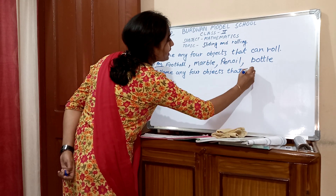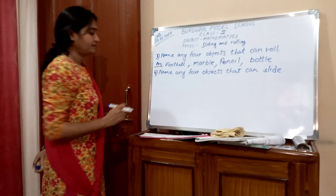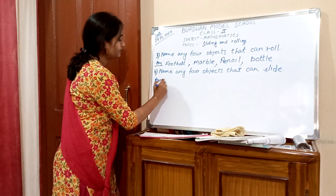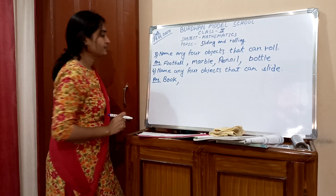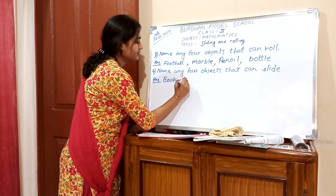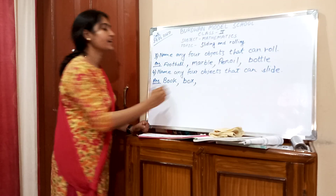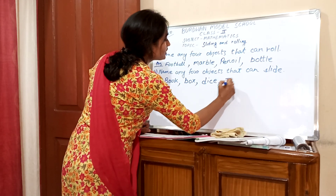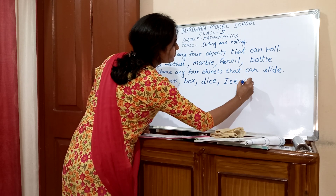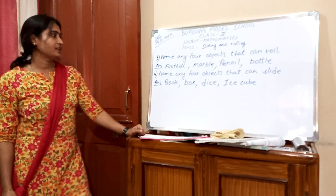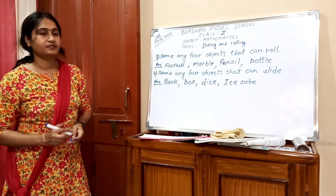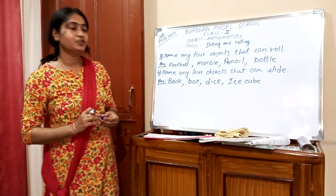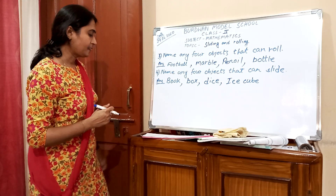Name any four objects that can slide. Which object can slide? Book — it is an example of a cuboid, it can slide. Box, such as a chalk box or any type of box, can slide. Dice — it is an example of a cube, it can slide. An ice cube can also slide. So football, marble, pencil, and bottle can roll, while book, box, dice, and ice cube can slide.